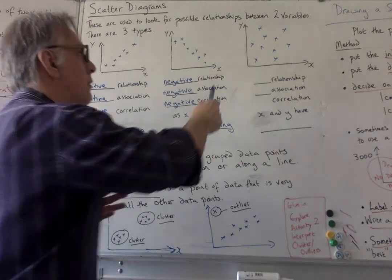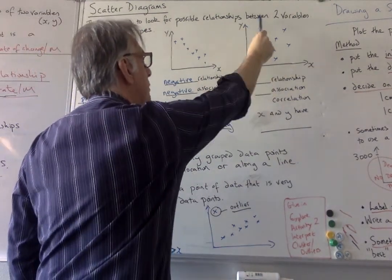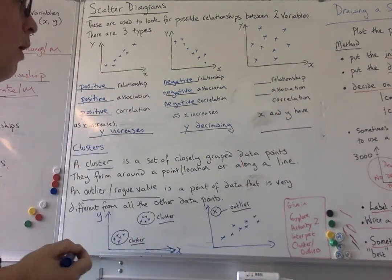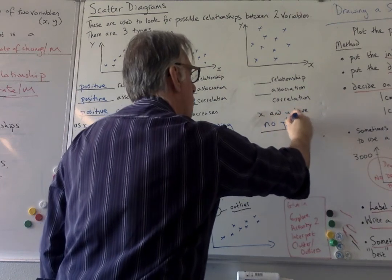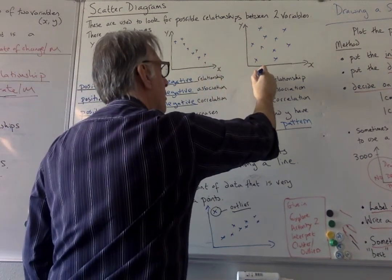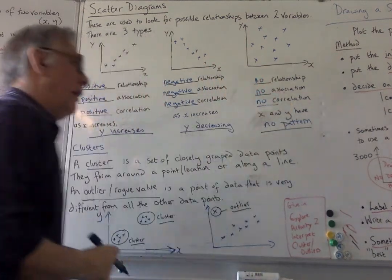Now, here is a different type of love relationship where different times the love seems to be going up, down, up, down, up, down, all around. So X and Y have, there's no pattern to it. It is really random and all over the place. So in fact here we say there's no relationship, no association and there's no correlation.